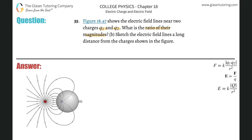So let's count up the number of lines around the red charge. 1, 2, 3, 4, 5, 6, 7, 8, 10, 11, 12, 13, 14, 15, 16, 17, 18, 19, 20, 21, 22, 23. So there are 23 lines around the red charge.